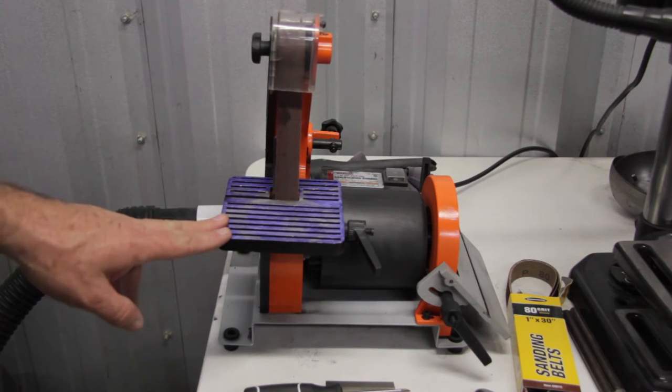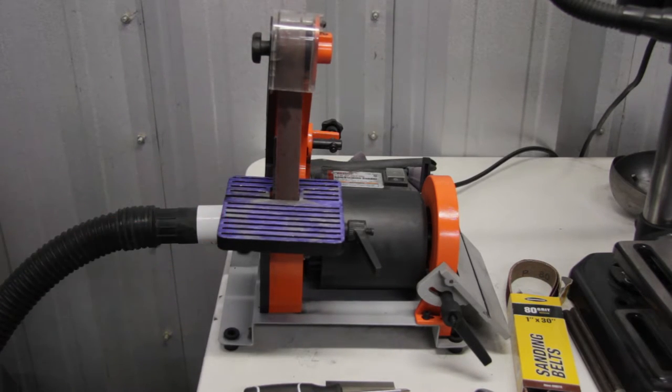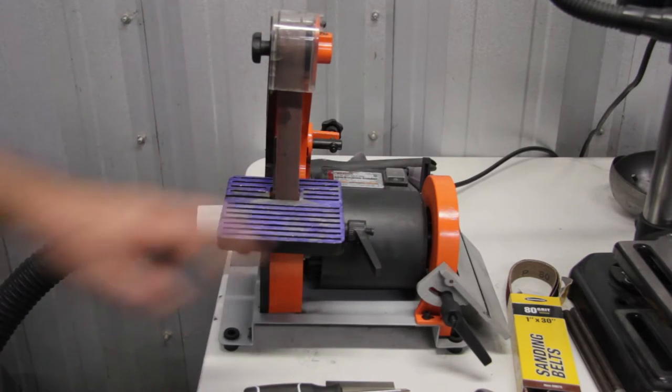It comes with an adjustable table for the belt. It also comes with a 5 inch disc with an adjustable table.